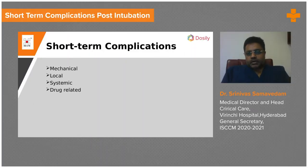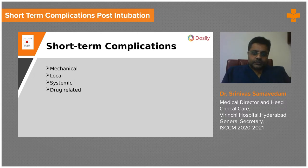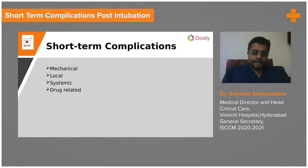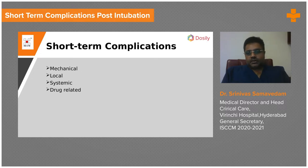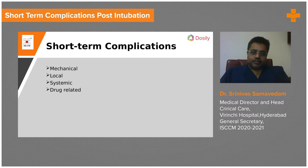These are the immediate complications — if you know the causes, you can avoid them, identify them, and prevent them in a good number of patients. If you have been successful in avoiding these problems and have ventilated the patient, there are some short-term complications like mechanical complications, local complications, systemic complications, and drug-related problems.